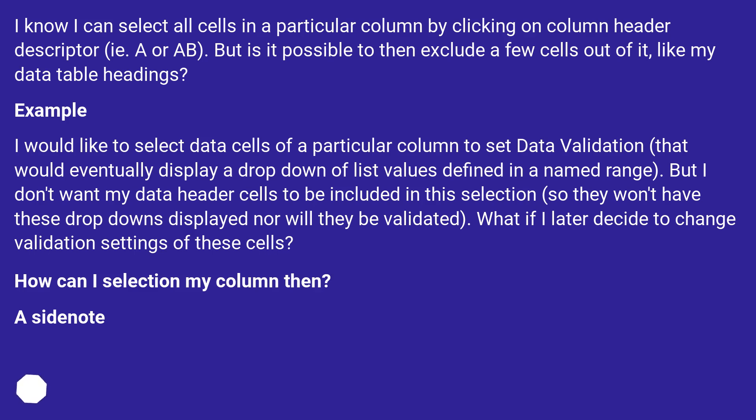What if I later decide to change the validation settings of these cells? How can I select my column then?